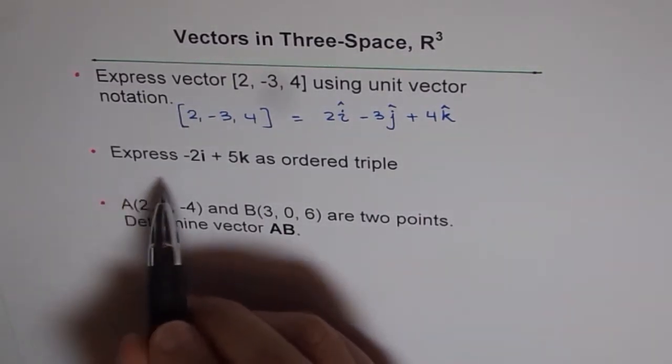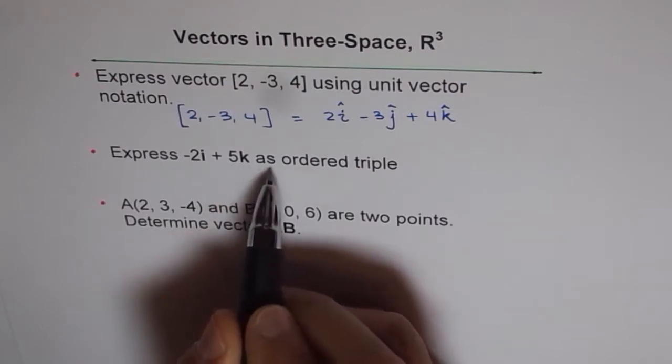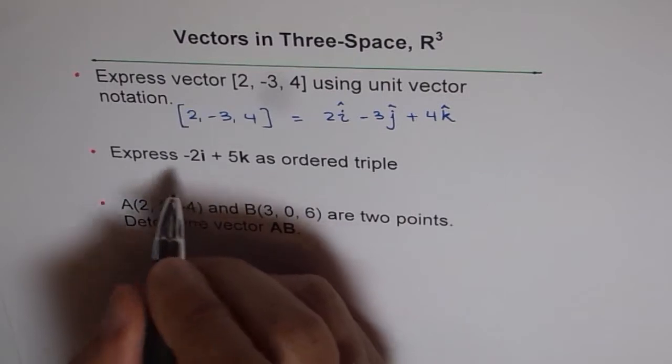The next example is express -2i + 5k as an ordered triple. So it's kind of the reverse of what we did. Let us write it down again.